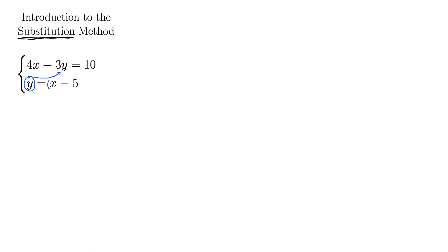When I do that, I'm going to be careful to put parentheses around it, because this is 3 times all of y. So when we plug in, it has to be 3 times all of x minus 5. So we're plugging in, and this first equation becomes 4x minus 3 times (x minus 5) equals 10.